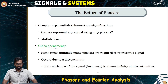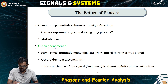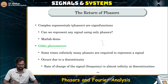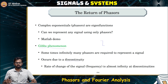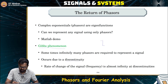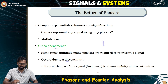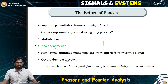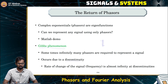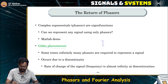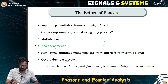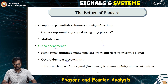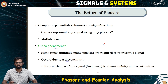Gibbs phenomena arises from discontinuities. In the square wave, the signal value changes suddenly from +1 to −1 or −1 to +1 — that is a discontinuity. The rate of change at that point is almost infinity: the time it takes to switch is almost 0, which means the rate of change of the signal amplitude is essentially infinite.